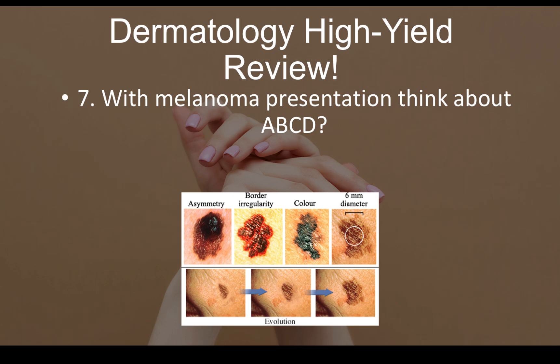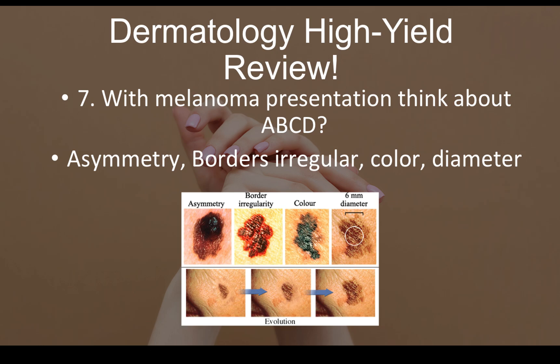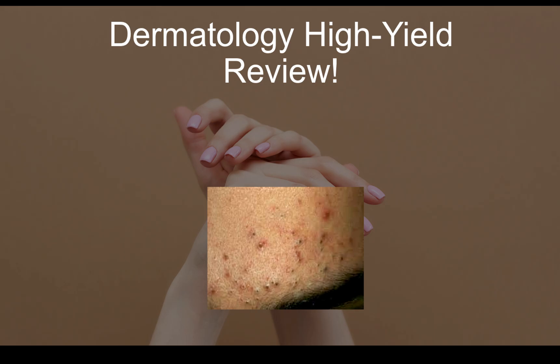Question number seven: with melanoma presentation, think about the ABCDs — Asymmetry, Border irregularity, Color changes, and Diameter greater than 6 millimeters. These features should be indicative of melanoma: asymmetric, irregular borders, different colors throughout, and diameter over 6 mm.